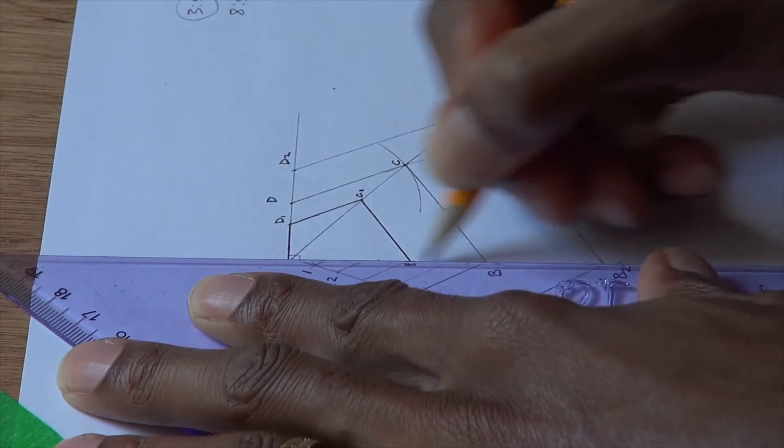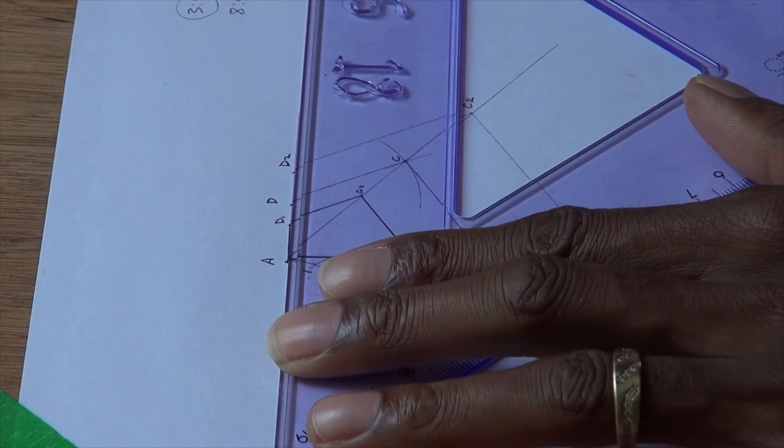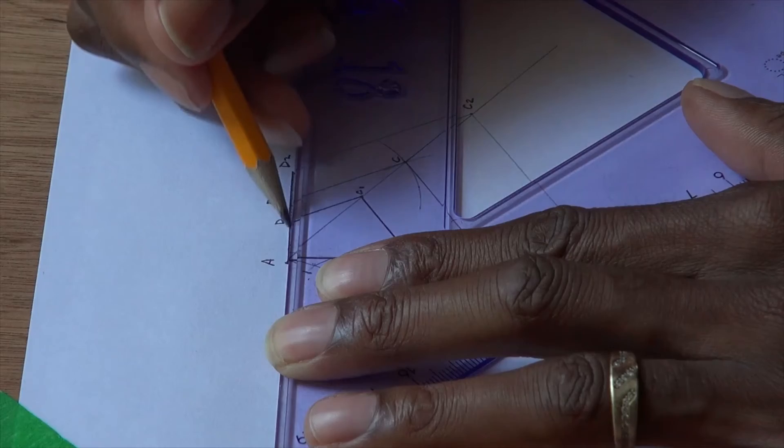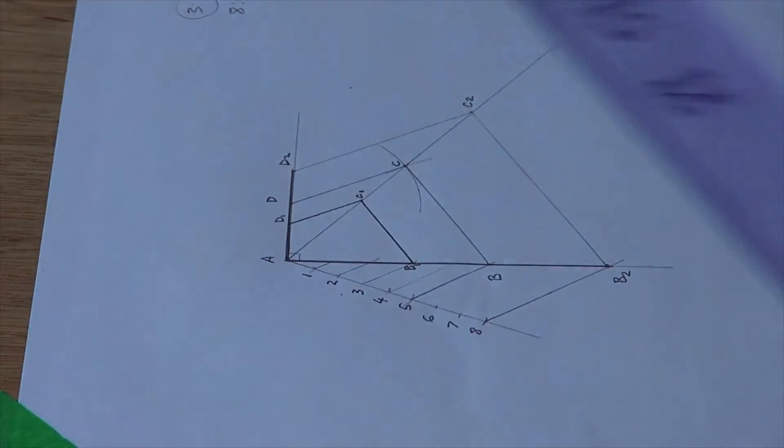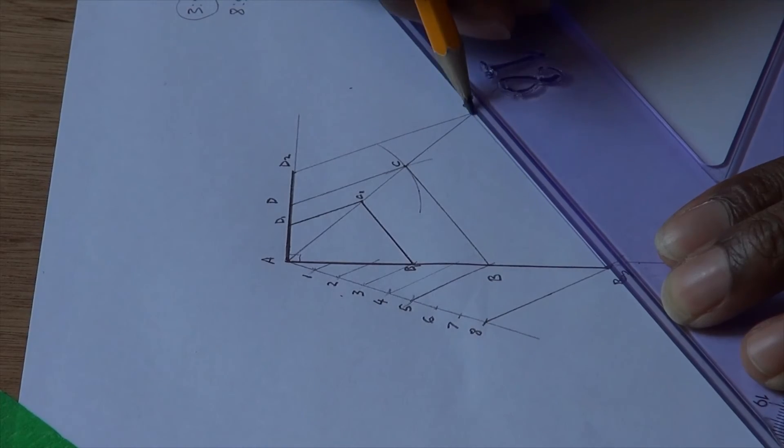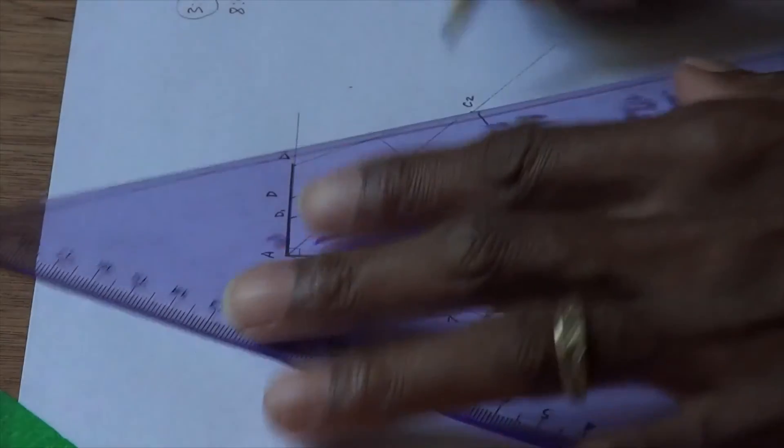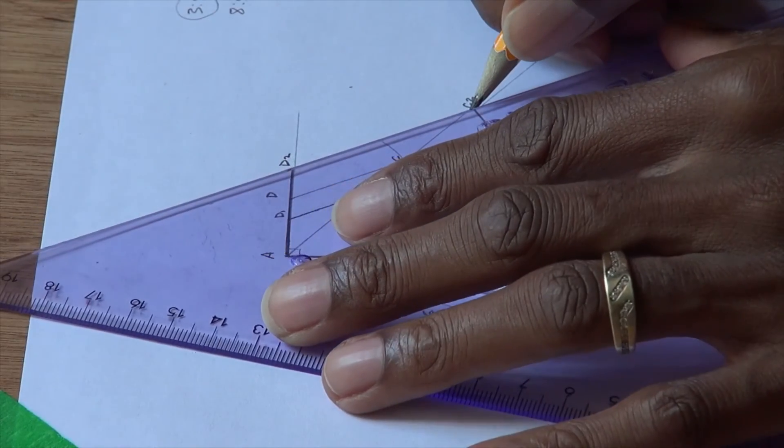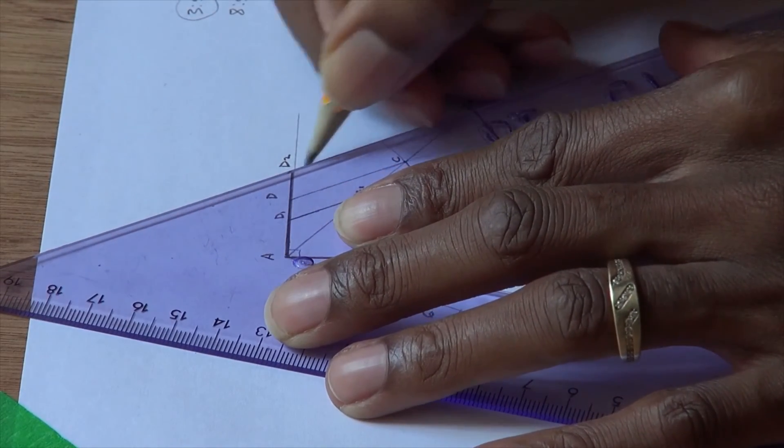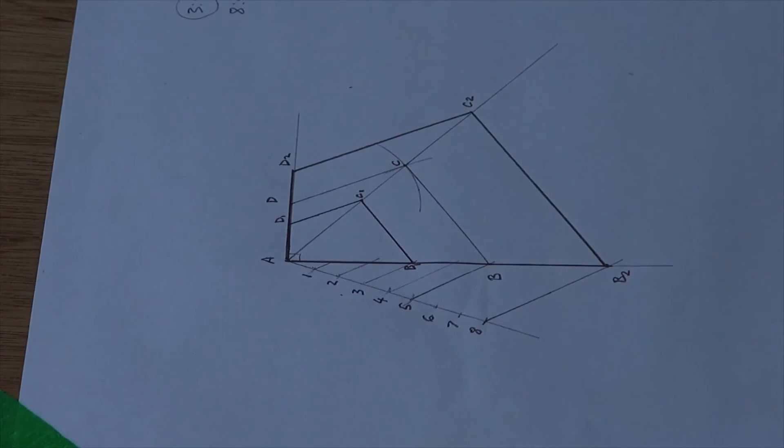from A to B2, from B2 to C2, and finally from D2 to C2. This is the enlarged figure in the ratio 8 to 5, using the same direct method.